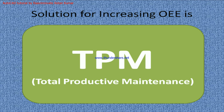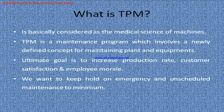The solution for increasing Overall Equipment Efficiency is Total Productive Maintenance. What is Total Productive Maintenance? TPM is basically considered as the medical science of machines. TPM is a maintenance program which involves a newly defined concept for maintaining plant and equipment. The ultimate goal is to increase production rate, customer satisfaction, and employee morale. We want to keep emergency and unscheduled maintenance to a minimum to increase the production rate.